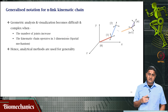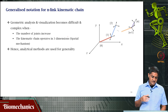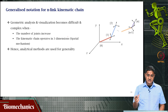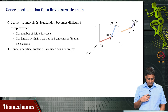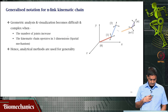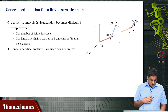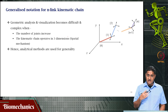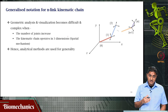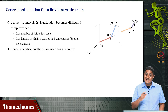For example, if the joint is a revolute joint, then the Z axis will be along the direction of the axis about which the joint rotates. Or if it is a prismatic joint, then the Z axis will be along the axis about which the joint translates.